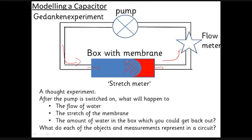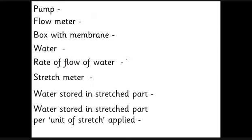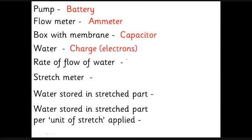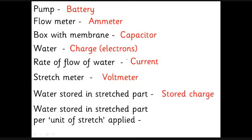In this analogy: the pump is like the battery, the flow meter is like an ammeter measuring how much water passes through per second, and the box with the membrane is the capacitor. The water is the charge, and the rate of flow of water is the current. The stretch meter — measuring how much the rubber has stretched — is like a voltmeter. The extra water on one side rather than the other is the amount of charge stored. Crucially, the water stored in the stretched part per unit of stretch applied is what we call the capacitance.